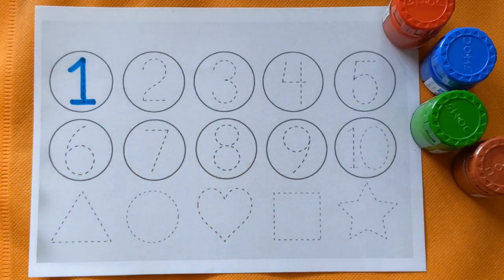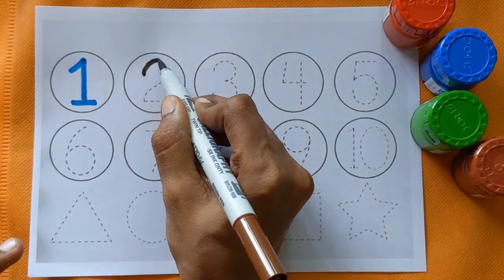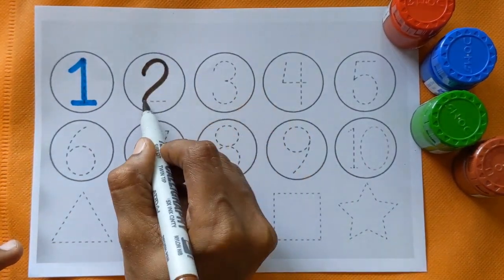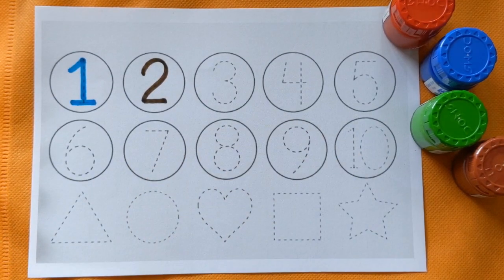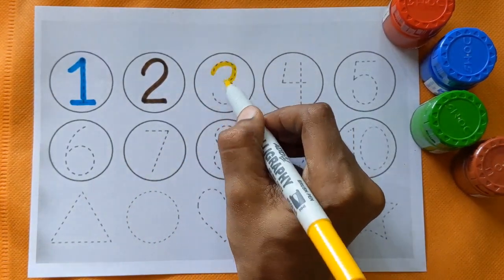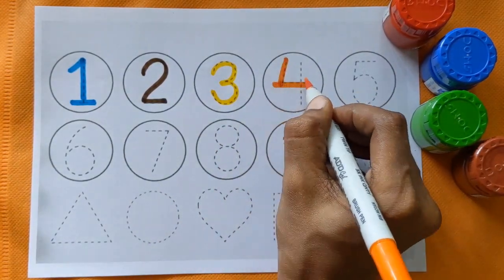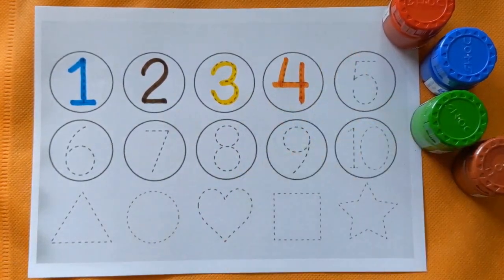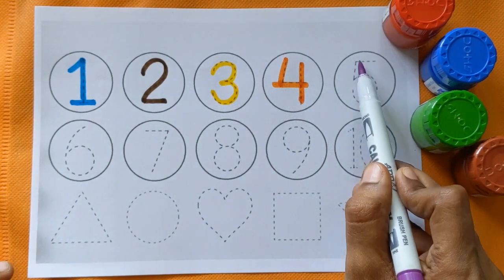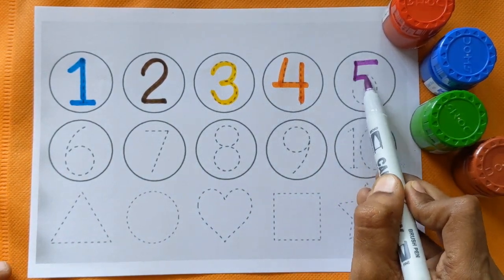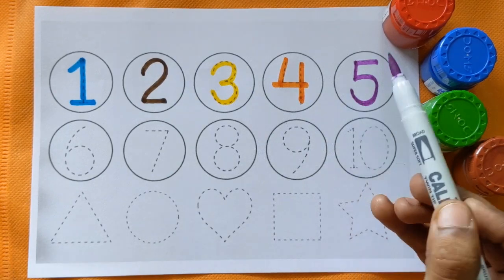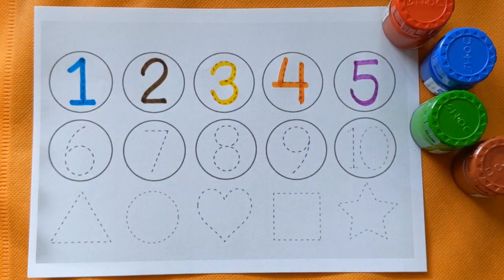Sky blue color, number 2, brown color, next is number 3, yellow color, 4, orange color, number 5, purple color.